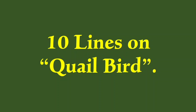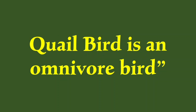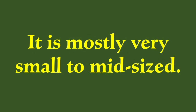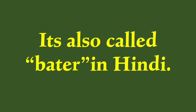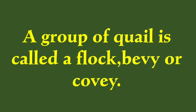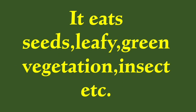10 Lines on Quail Bird. Quail bird is an omnivore bird. It is mostly very small to mid-sized. It is also called Bater in Hindi. A group of quail is called a flock, bavi, or kavi.